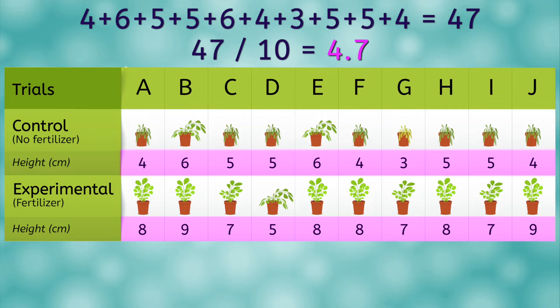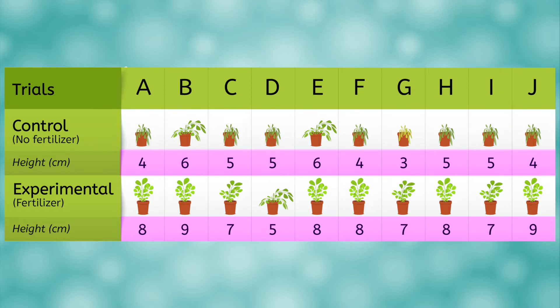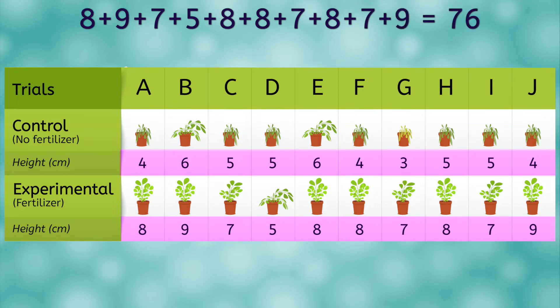So on average, our plants in the control group with no fertilizer grew to a height of 4.7 centimeters. Let's see how this compares to the average for the experimental group. We add 8, 9, 7, 5, 8, 8, 7, 8, 7, and 9 to get 76. Again, we divide by 10 to get an average height of 7.6 centimeters for our experimental group.